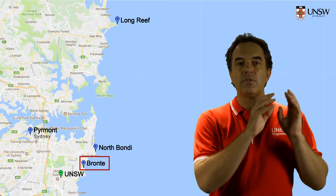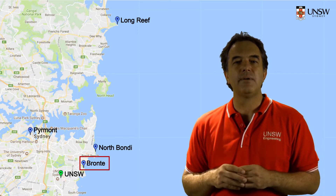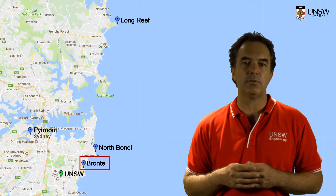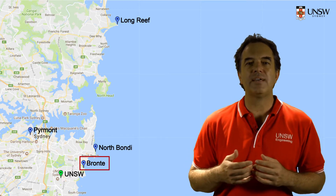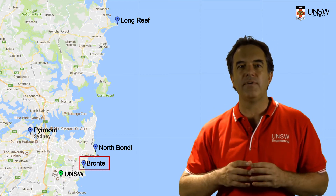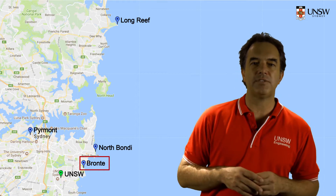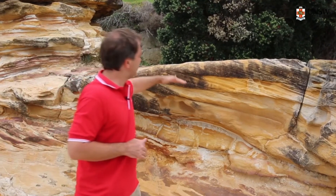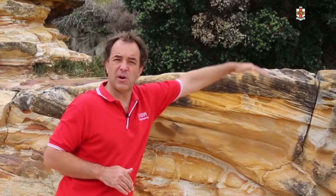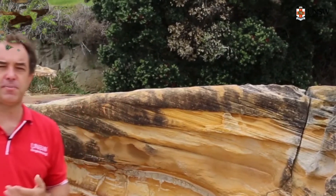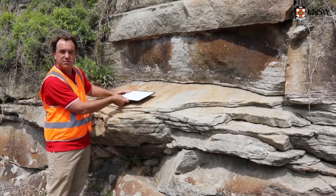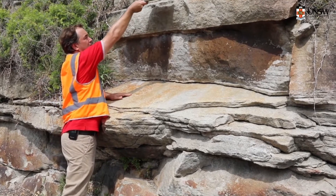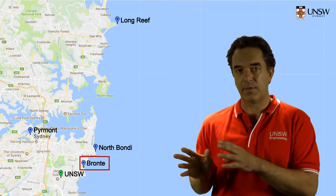The first component of our model, done prior to going to the site, is called the preliminary geological model. This model allows us to have a prediction of what we might expect at the site. Its job is to highlight any potential issues we might encounter that might impact on our particular engineering project, allowing us to focus on what matters when we get to site.